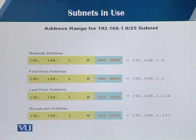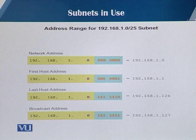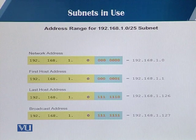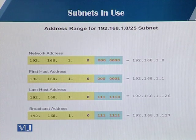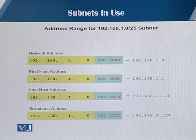Now let's talk about the address range for this network. The first subnet is 192.168.1.0/25. The network address is 192.168.1.0, the first host address is 192.168.1.1, the last host address is 192.168.1.126, and the broadcast address is 192.168.1.127 — which is all ones in the remaining 7 host bits, since we used the 8th bit to create two subnets.